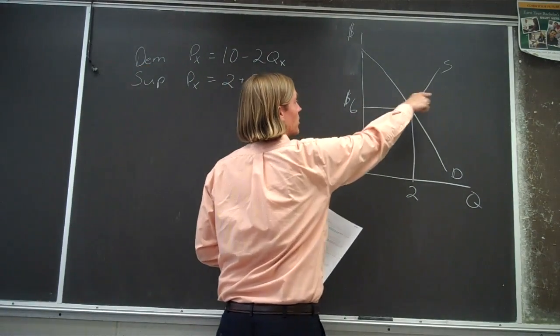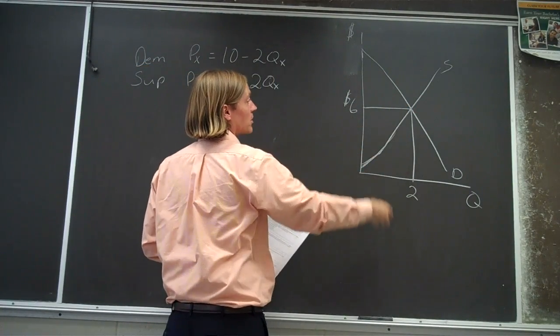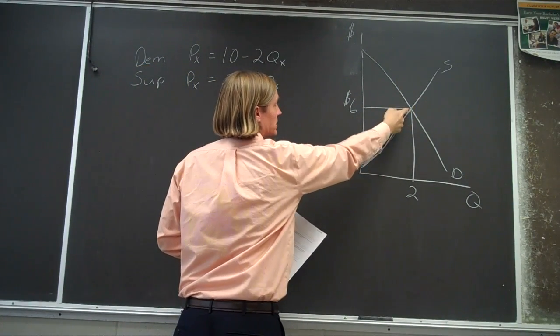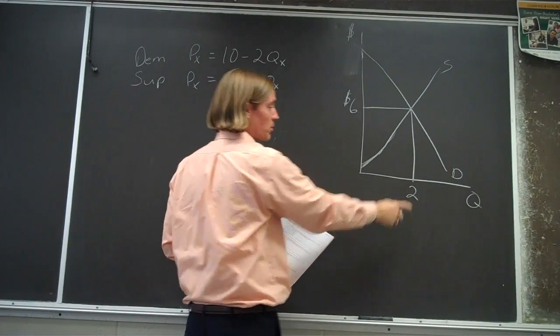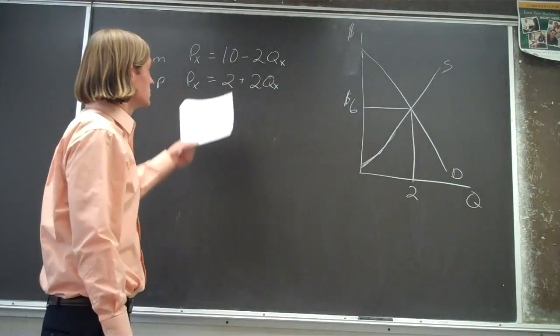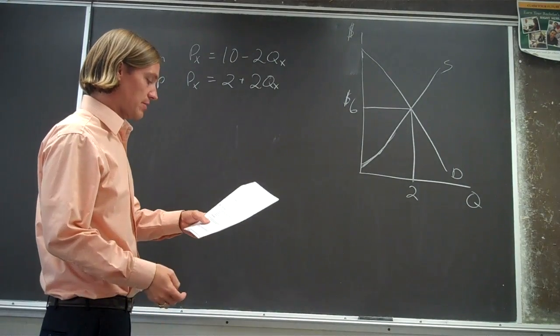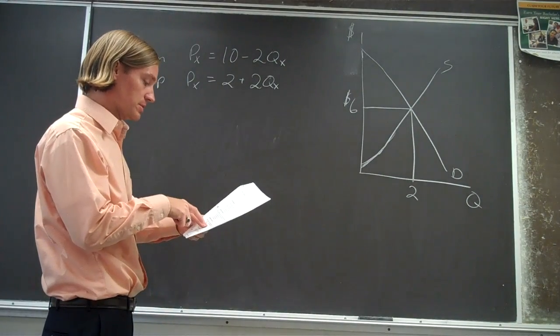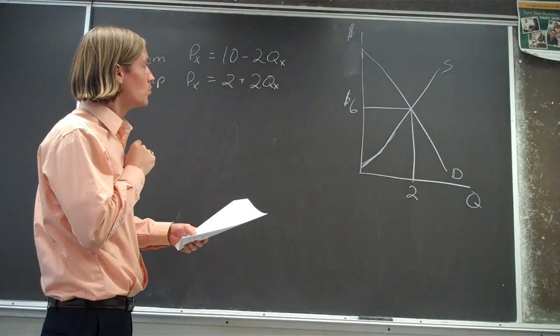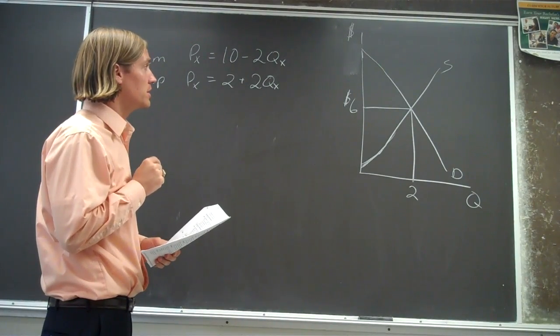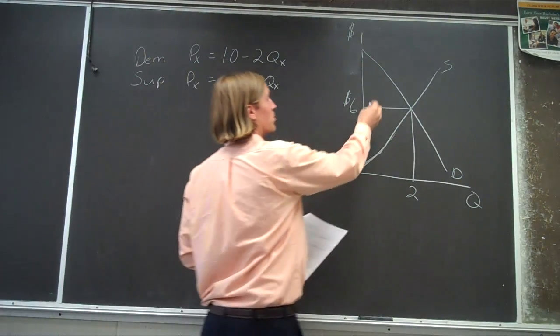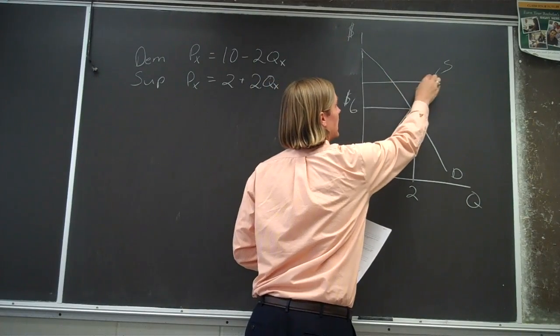And the question asks, so here's our supply curve and our demand curve graphically, and the equilibrium price should be $6, equilibrium quantity is 2. So you can solve those, compute those out from those supply and demand equations. And then we're going to ask the question, what happens when the government puts in a price floor of $8?